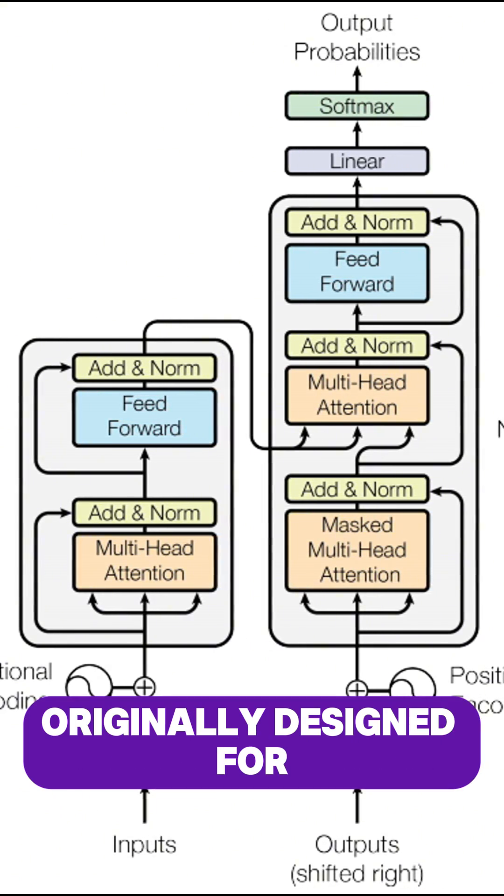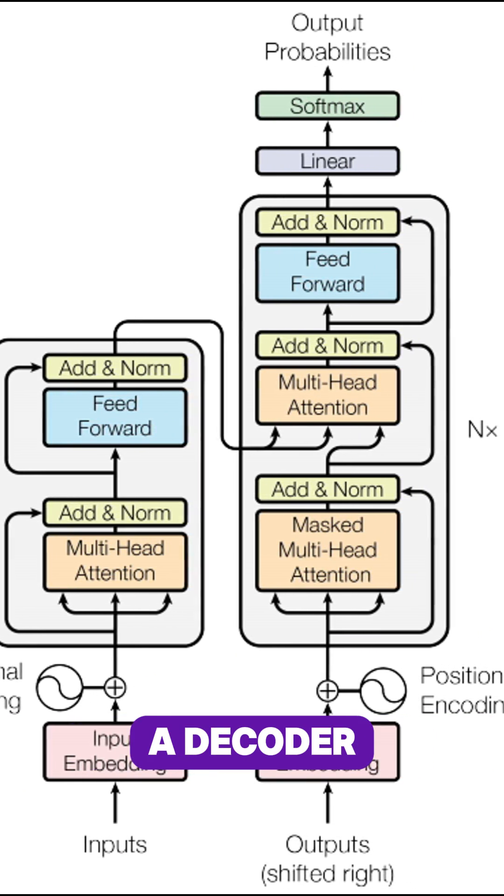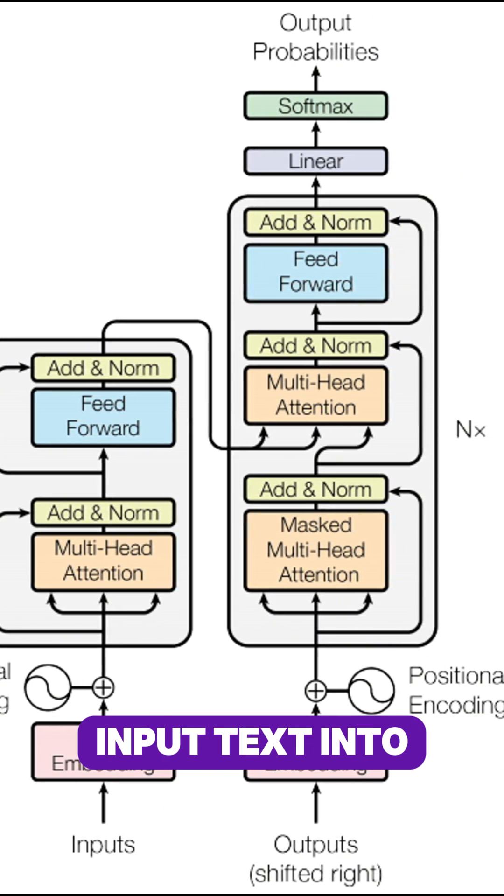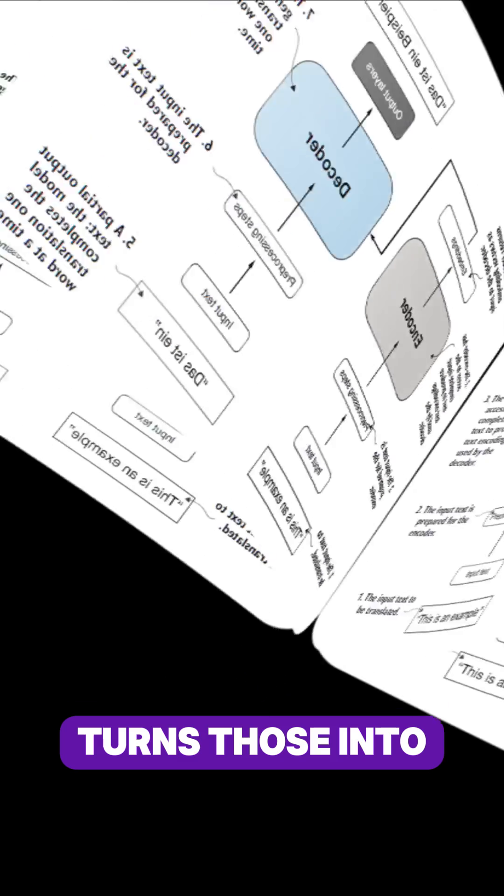The transformer was originally designed for machine translation with two key parts: an encoder and a decoder. The encoder processes input text into numerical representations while the decoder turns those into output text.